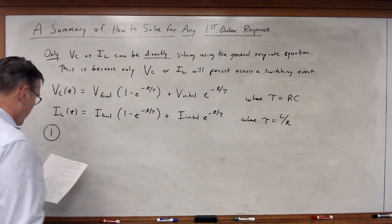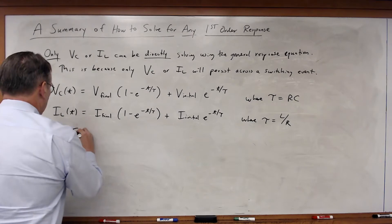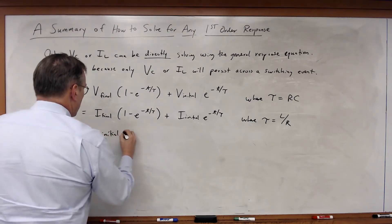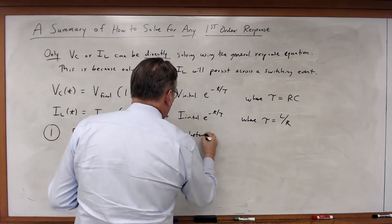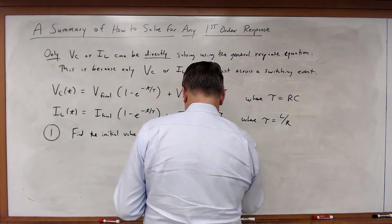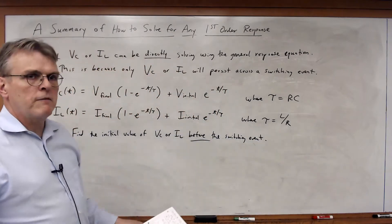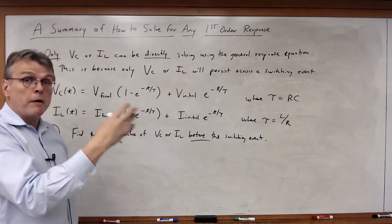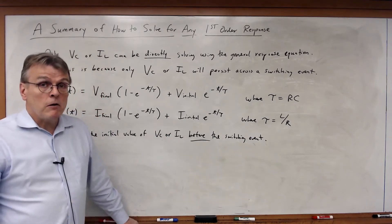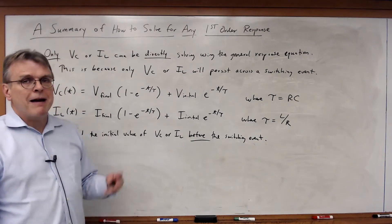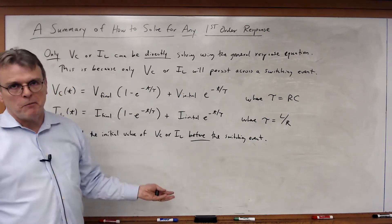Step one: find the initial value of VC or IL before the switching event. It doesn't matter whether the switching event happens because of a switch changing the topology of the circuit or because of a unit step function — either way, you have a switching event. We always place the switching event at t = 0 because it makes the math easier, though mathematically it can happen at any time.